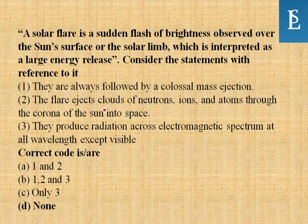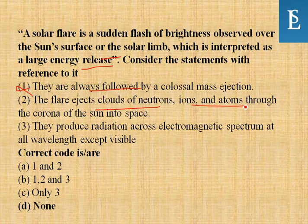A solar flare is a sudden flash of brightness observed over the Sun's surface or solar limb, interpreted as a large energy release. Consider these statements: they are always followed by a colossal mass ejection — not correct; the flare ejects clouds of neutrons, ions, and atoms through the corona into space — not correct; they produce radiation across the electromagnetic spectrum at all wavelengths except visible — not correct. So the answer is none of the above.